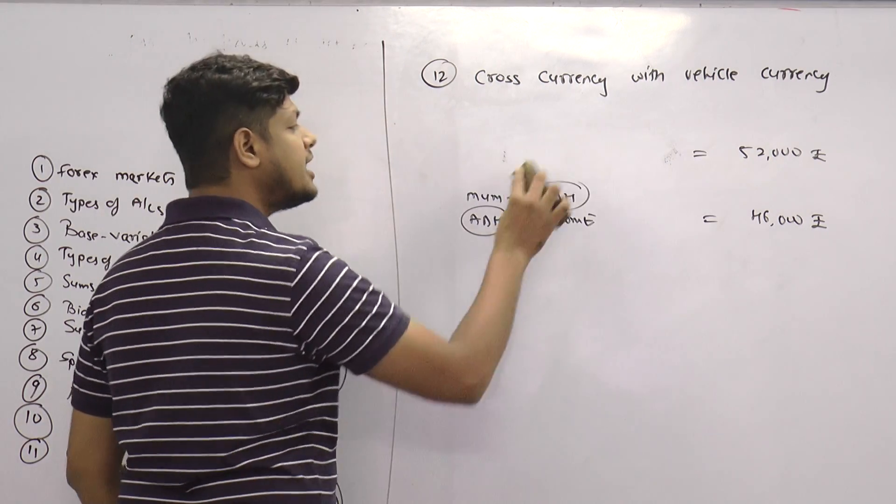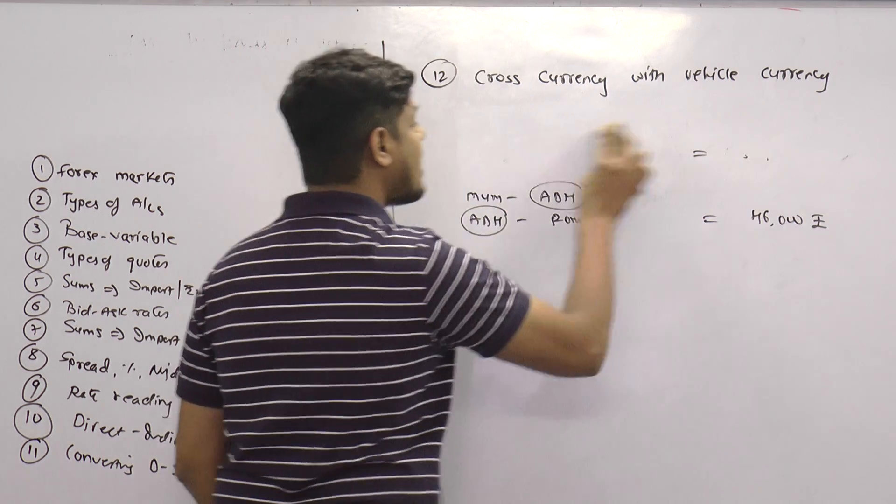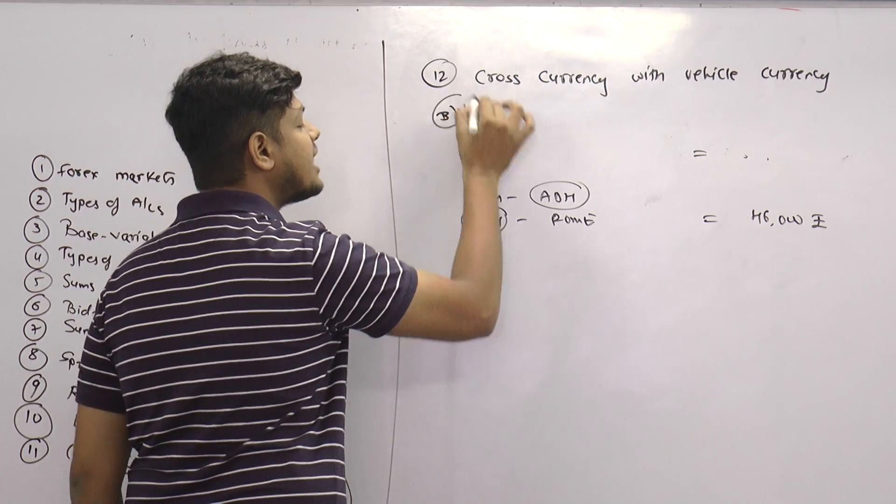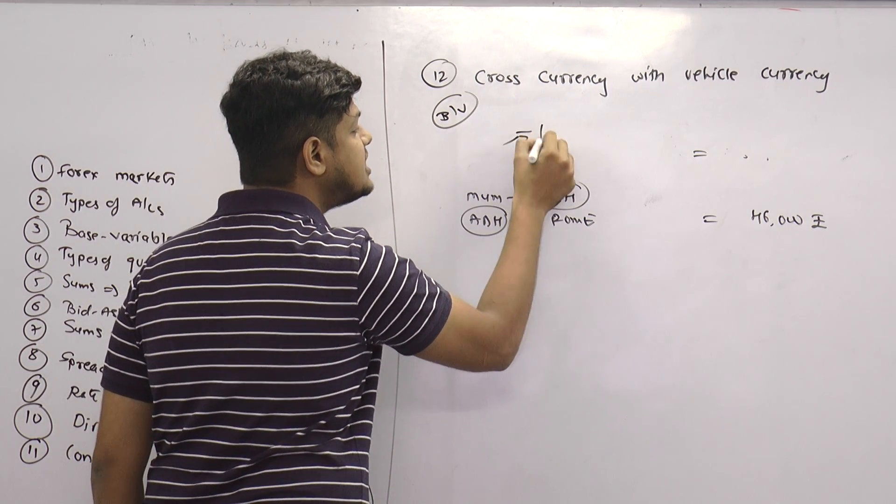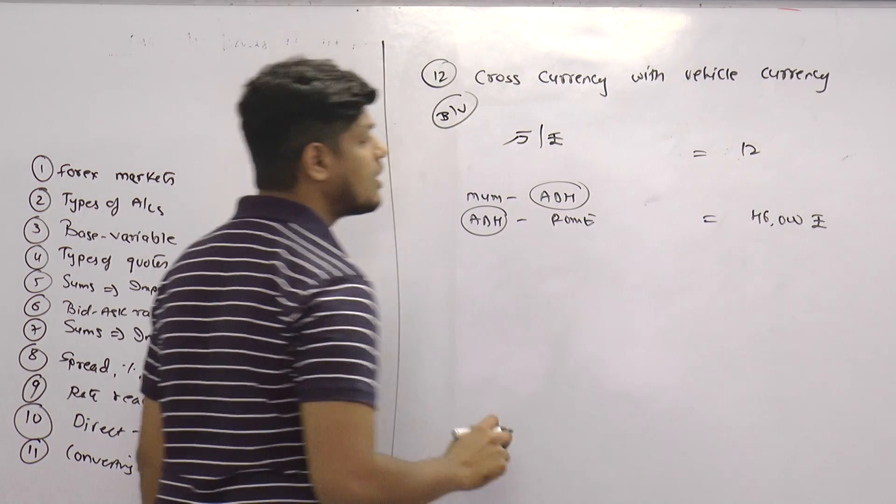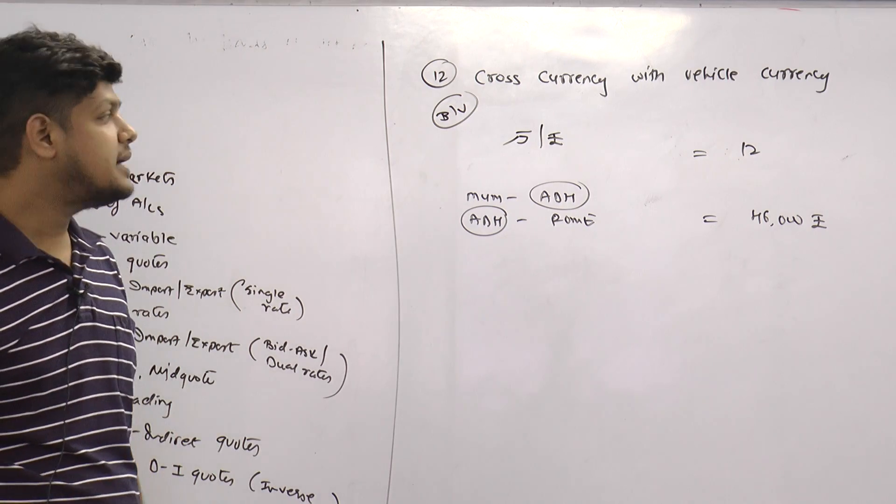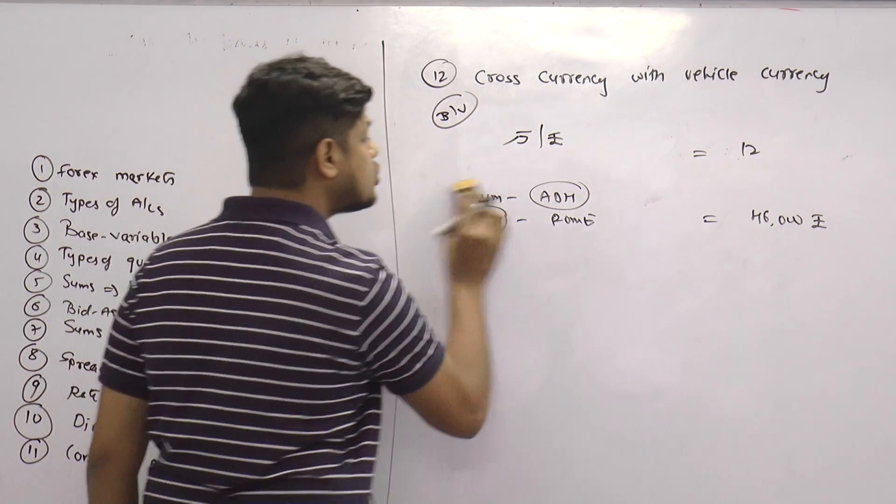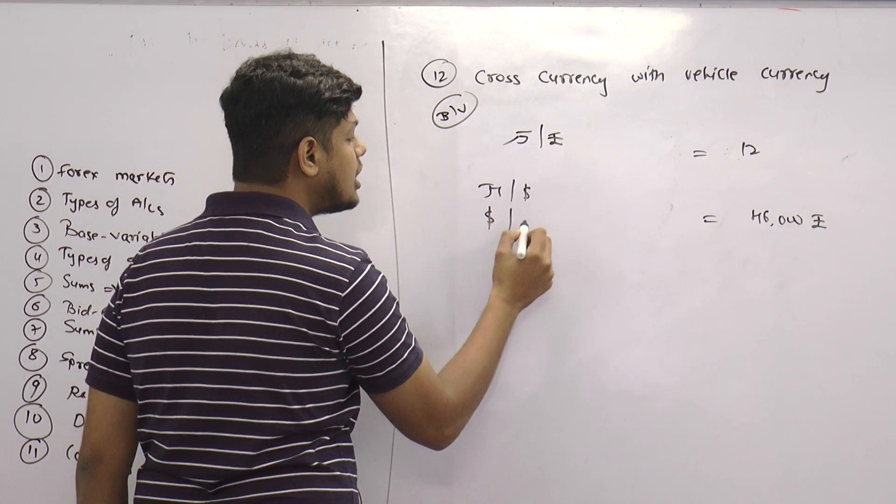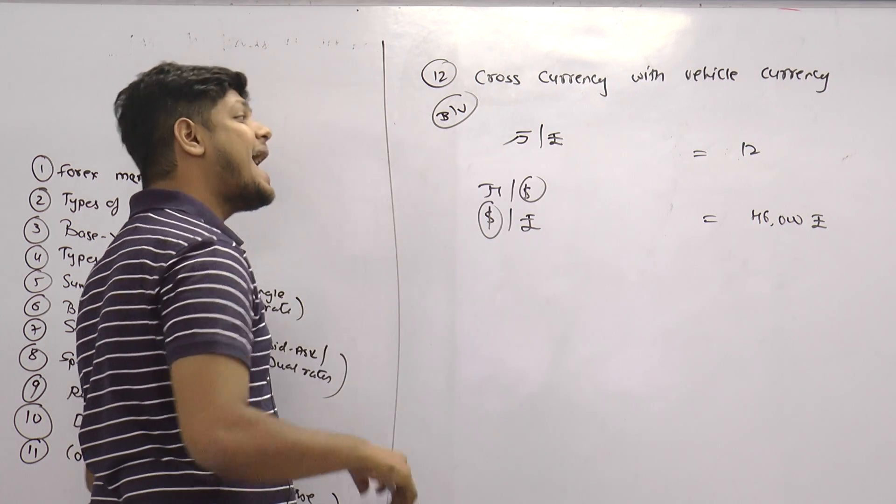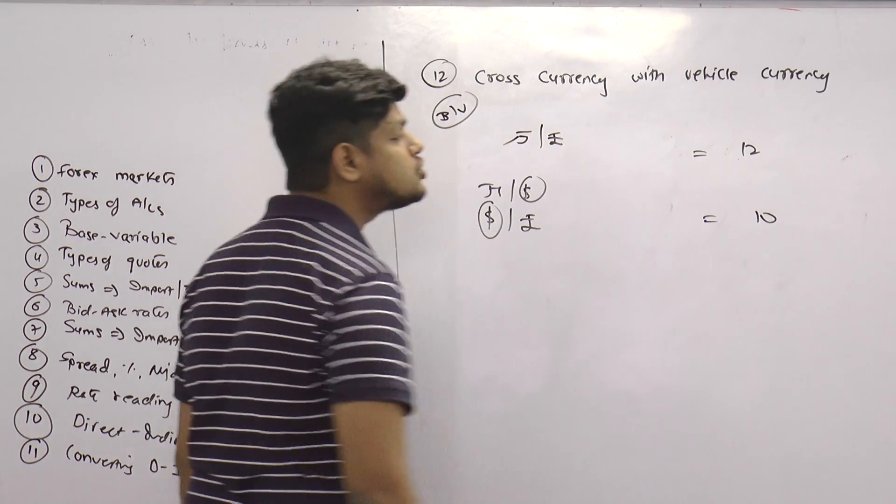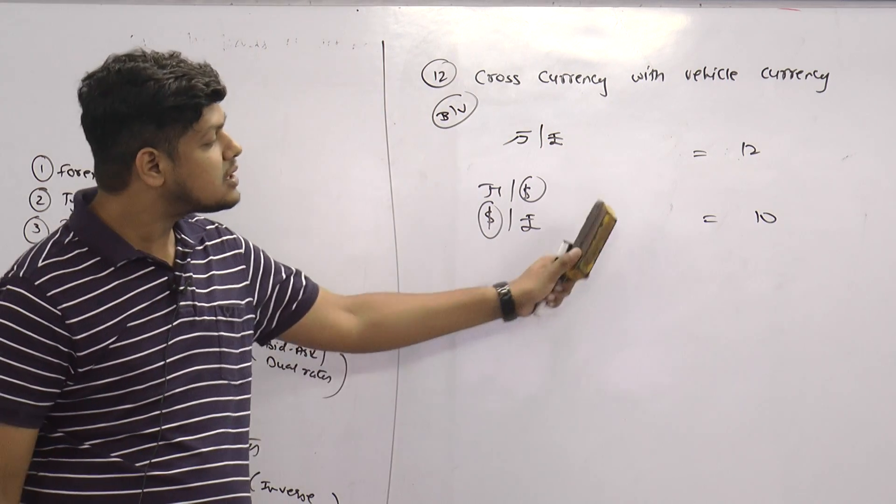Instead of the Mumbai-Rome flight, what if I want a Yuan-Rupee quote considering base variable format where the rate is for Yuan. Suppose if I see the Yuan-Rupee quote going in the market as 12 rupees, 1 Yuan equals 12 rupees. But if I go to the same route through another quote, Yuan-Dollar and Dollar-Rupee, Dollar is a vehicle currency, and if I see that rate comes to 10 rupees eventually, I would rather go with this quote.